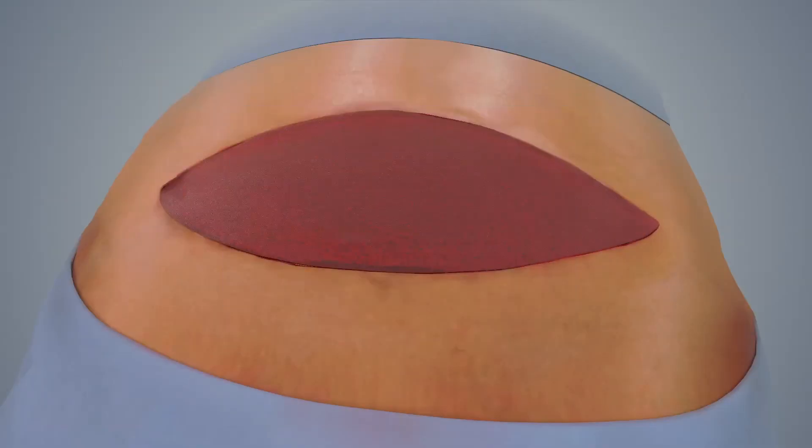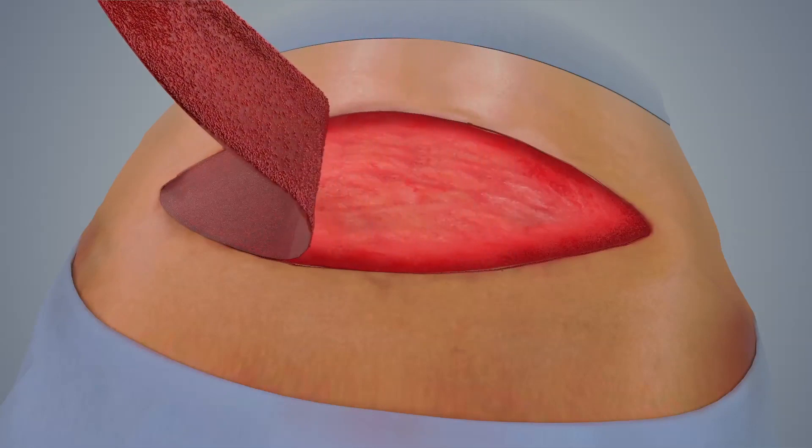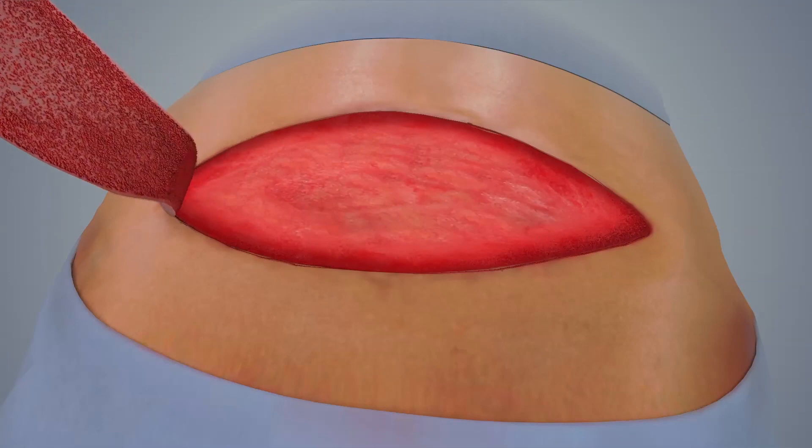Once the neodermis has fully formed, a simple blanche test will indicate that the BTM is ready for delamination. The sealing membrane can be removed. The new dermis is ready for closure according to the clinical choice of the surgeon.